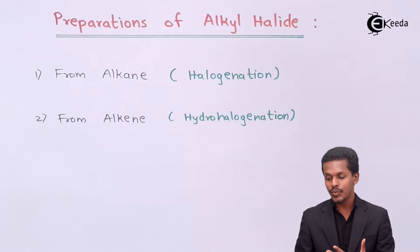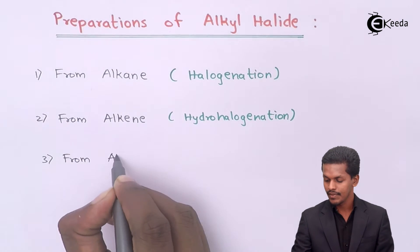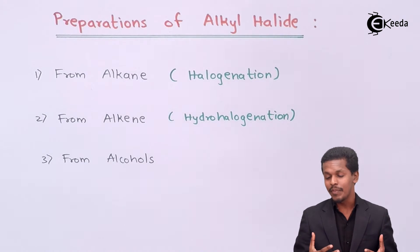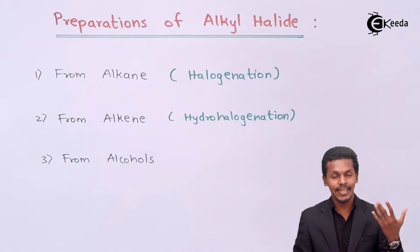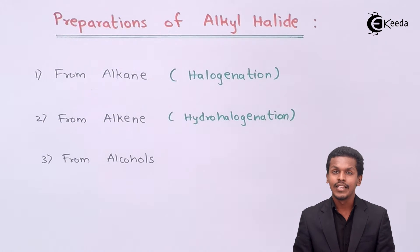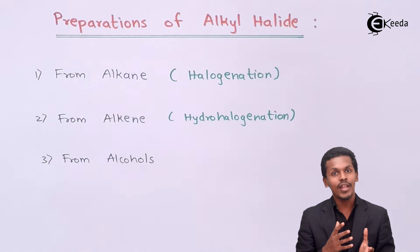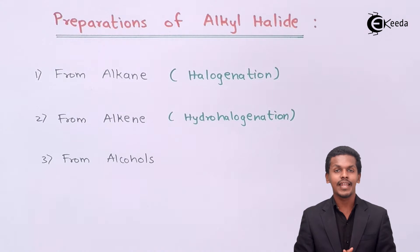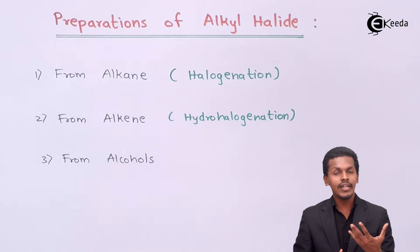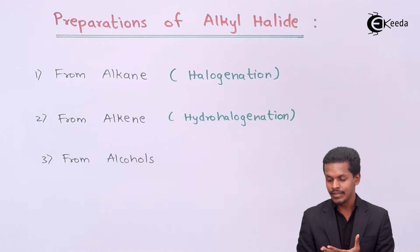The next method is preparing alkyl halides from alcohols. We can prepare alkyl halides from alcohols because the OH group attached to the alkyl carbon has a very polar nature, as discussed in our previous lecture. That OH group can be replaced by a halogen atom — this is how we prepare alkyl halides from alcohols. There are different reagents that can be used during this conversion.